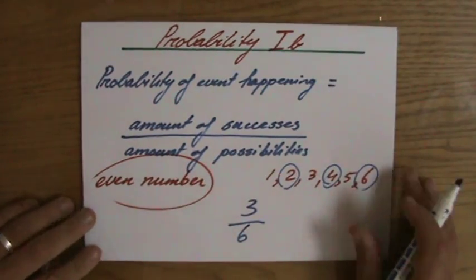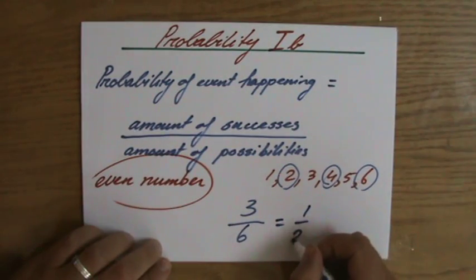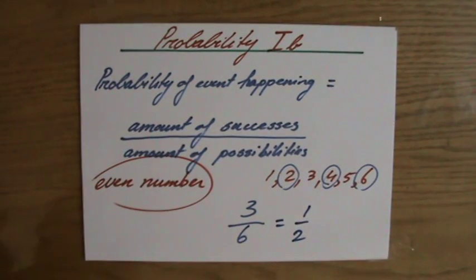Now, with probability, you do not have to simplify a fraction. Now, you could, if you want, say, that's one over two, yeah, or perhaps 0.5, yeah?